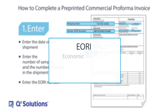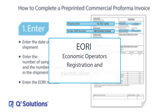IORI stands for Economic Operators Registration and Identification Number. Customs administrations require the entry of an IORI number. Investigator sites utilize their own IORI number or a number provided by the sponsor. Please discuss with the sponsor or CRO country lead if you have any questions or concerns.